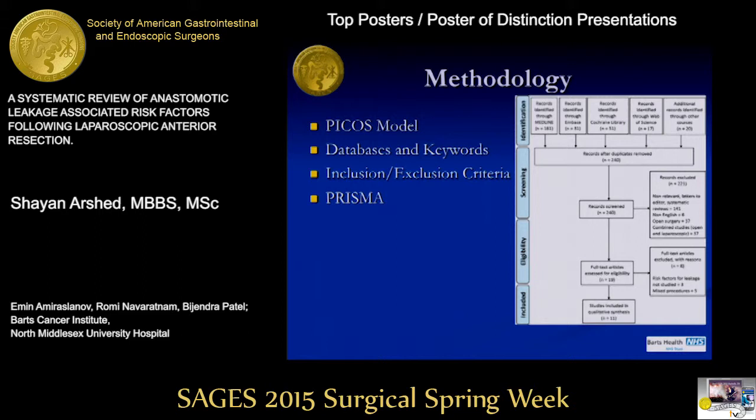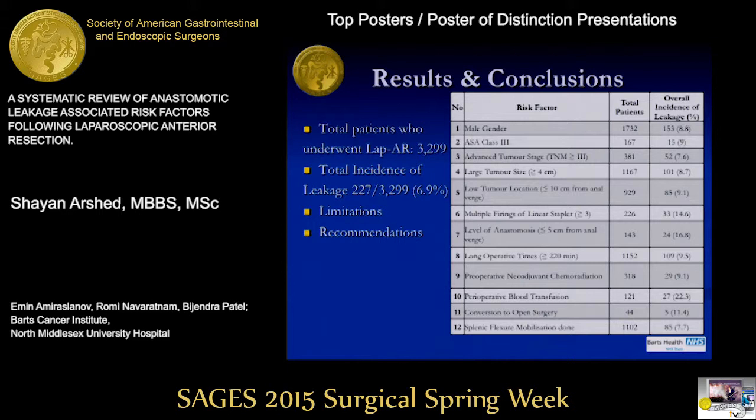The PRISMA chart shows 11 papers that were finally included for qualitative synthesis — this is a descriptive review. In our results, the total patients who underwent laparoscopic anterior resection were 3,299, with a 6.9% leakage rate.